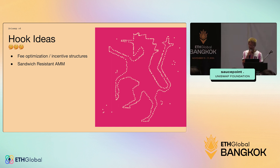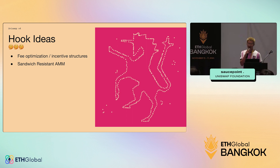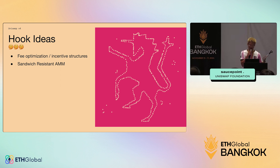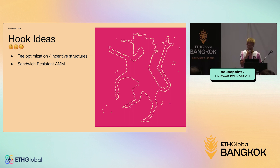There are ideas around building an AMM that's resistant to sandwich attacks. About two weeks ago Dan Robinson published a paper on prediction markets and came up with a really fun custom curve that would be very conducive to providing liquidity on prediction markets.